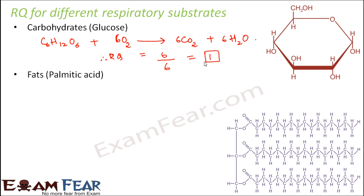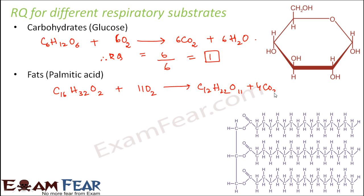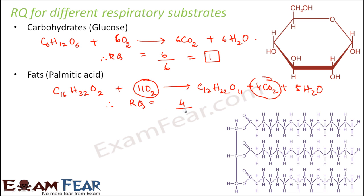Now let us look at fats — for example, palmitic acid. Palmitic acid is C₁₆H₃₂O₂. The balanced equation for its complete oxidation gives 23O₂ consumed and produces CO₂ and H₂O. The respiratory quotient here is the number of CO₂ molecules formed, which is 4, divided by the oxygen used, which is 11 — so 4 divided by 11 equals 0.36. That is the respiratory quotient for palmitic acid.